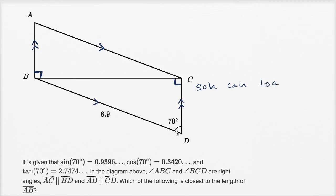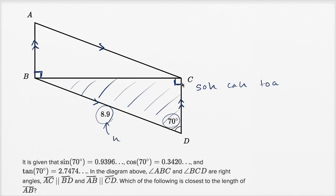For triangle BCD, we know the hypotenuse. We know the angle. And if we were trying to figure out what CD was equal to, we would need to figure out what the adjacent side is — I'll call that lowercase a. So what deals with adjacent and hypotenuse? Cosine deals with adjacent and hypotenuse.